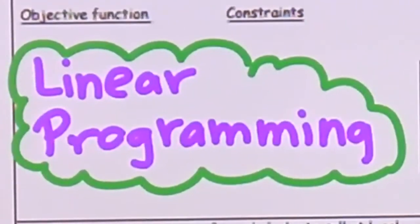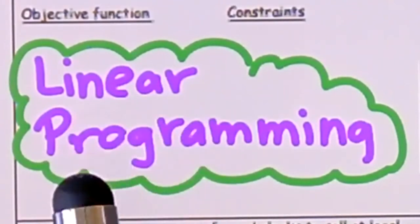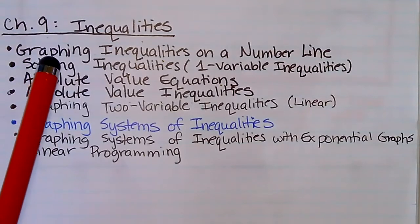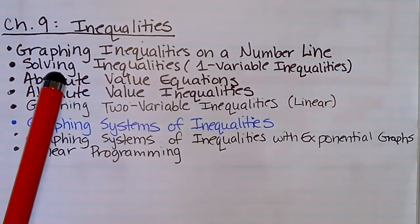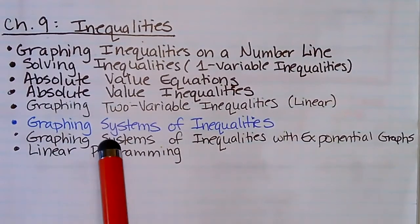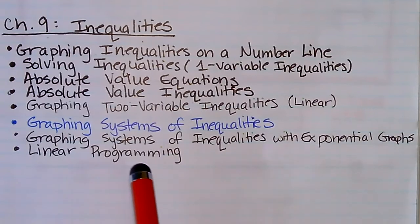Today we're going to be covering a topic I'm adding in for chapter 9: linear programming. It's basically dealing with systems of inequalities but with word problems. In our table of contents under chapter 9 inequalities, we have graphing inequalities on the number line, solving one-variable inequalities, absolute value equations, absolute value inequalities, graphing two-variable inequalities, graphing systems of inequalities, graphing systems of inequalities with exponential graphs, and today linear programming.